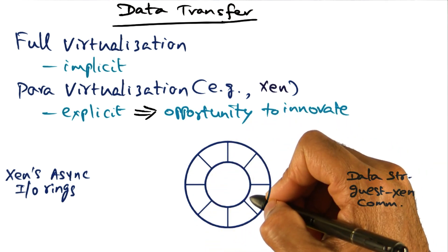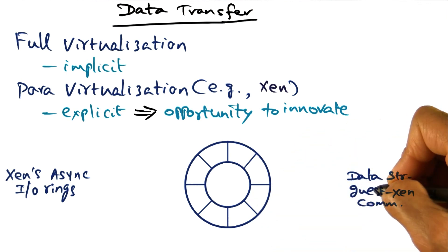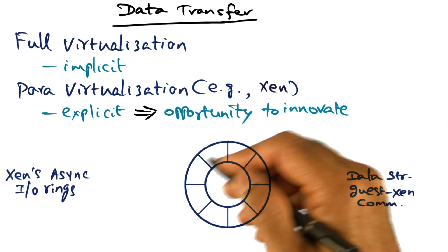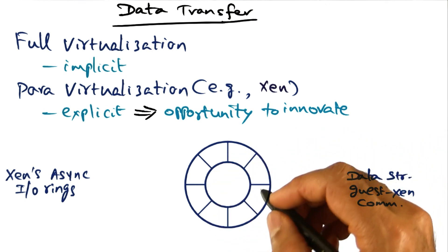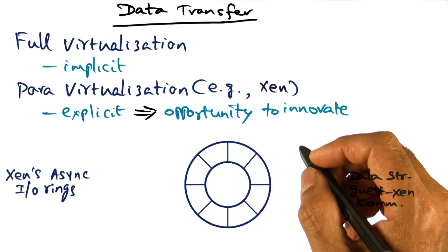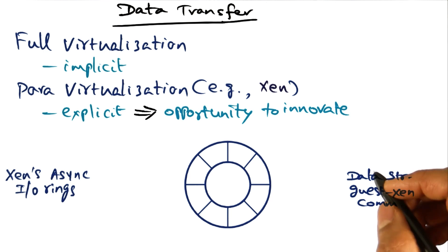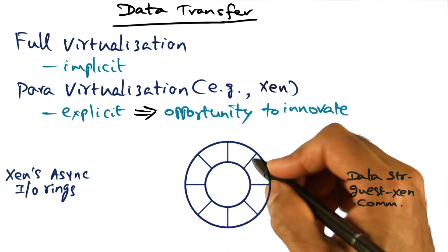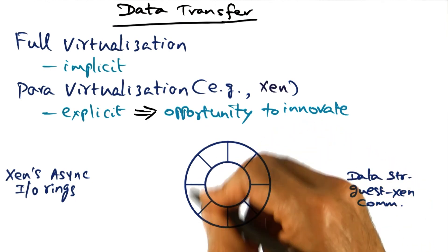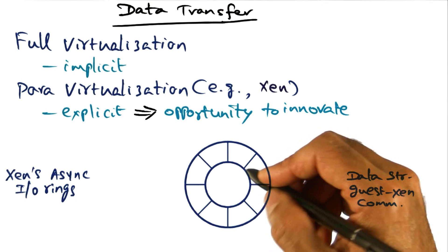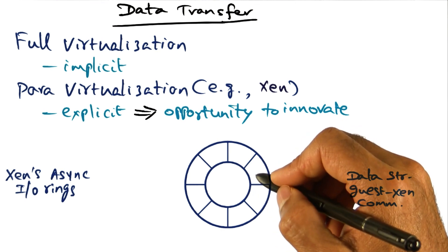Xen provides asynchronous IO rings, which is basically a data structure that is shared between the guest and Xen for communication. Any number of these IO rings can be allocated for handling all the device IO needs of a particular guest domain. The IO ring itself is just a set of descriptors — it's a ring data structure, and that's why it's called IO ring.